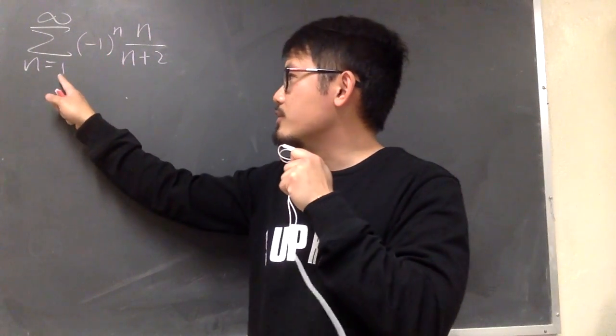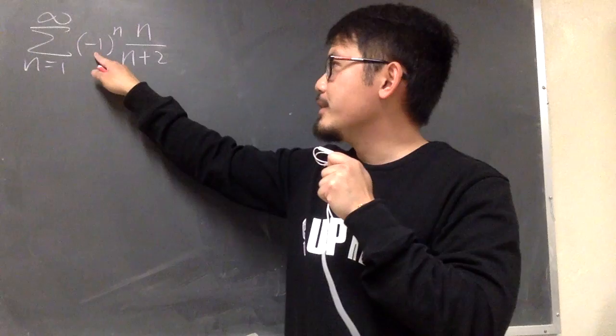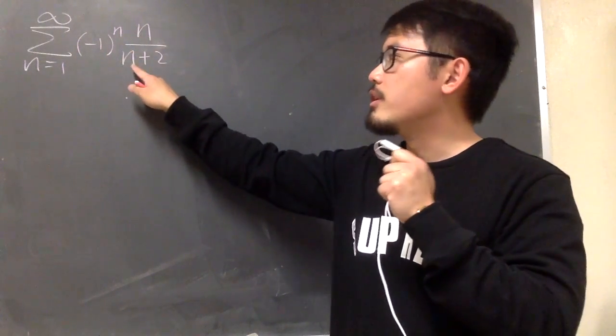Converge or diverge, sigma as n goes from 1 to infinity, parentheses negative 1 to the nth power times n over n plus 2.